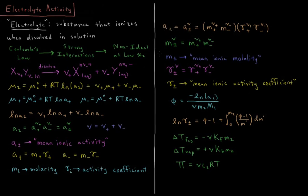The activity of the electrolyte equals the mean ionic activity raised to the power ν, which expands to m+ raised to ν+ times m− raised to ν− times γ+ raised to ν+ times γ− raised to ν−. We define the mean ionic molality as m±^ν = m+^(ν+) · m−^(ν−), and the mean ionic activity coefficient as γ±^ν = γ+^(ν+) · γ−^(ν−).